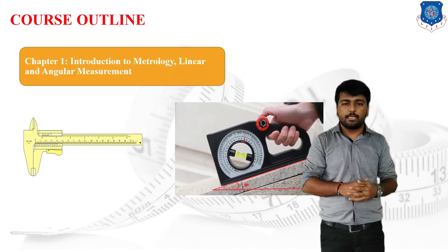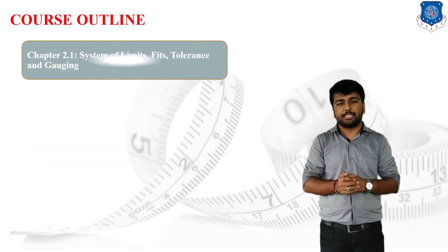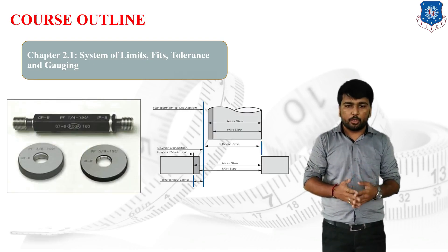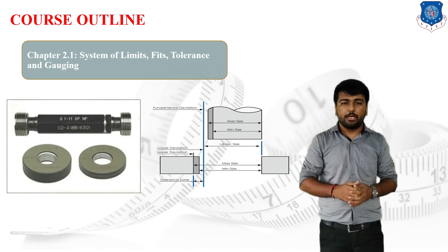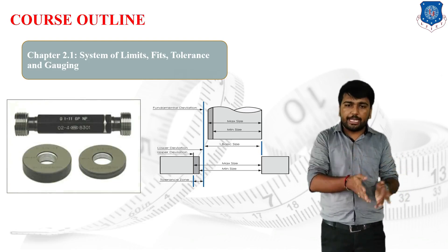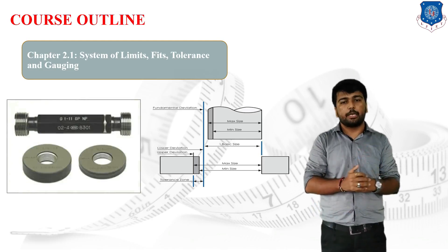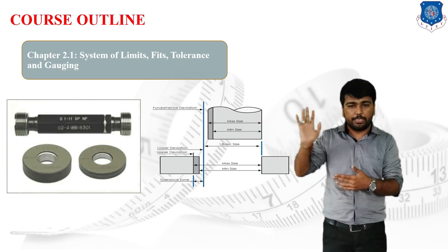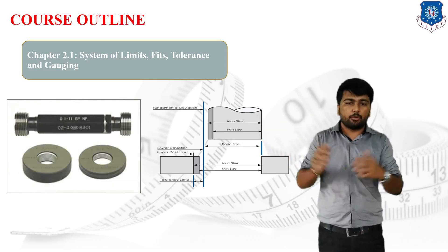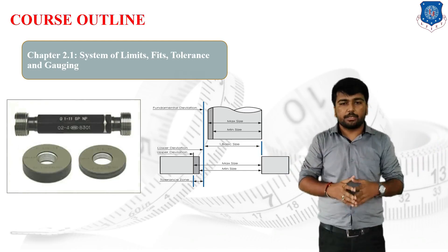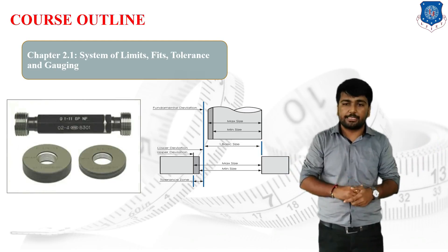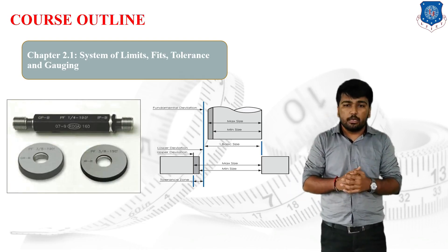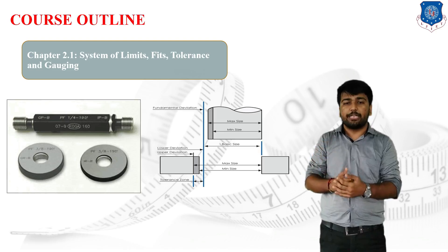Unit 2 covers the System of Limits, Fits, Tolerance and Gauging, which is widely useful in the mass production era. In ancient times, single components were manufactured and assembled together, but nowadays parts are manufactured in separate units across different locations. To assemble them properly, we follow the concept of limits, fits and tolerance. Gauging is useful for checking whether parts are acceptable or rejectable within a given range.